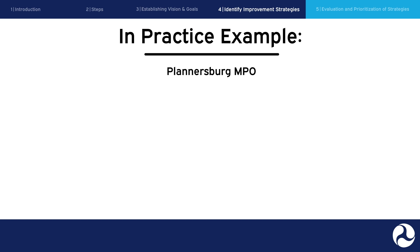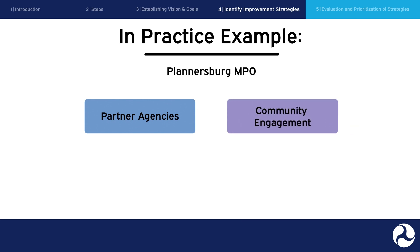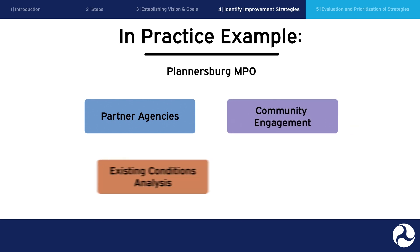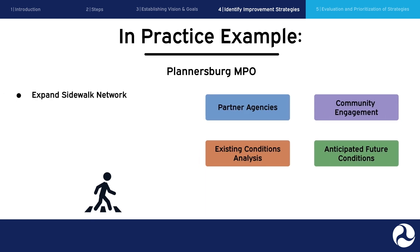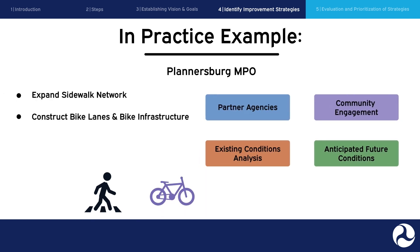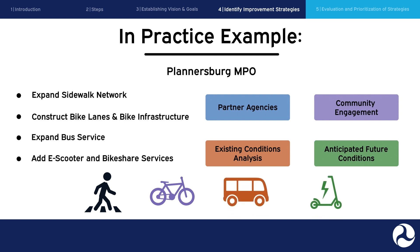In practice example: the MPO staff work with partner agencies, synthesize the results from the previous community engagement, their analysis of the planning area's existing conditions, and their understanding of anticipated future conditions to identify a range of non-vehicular strategies that would improve connectivity. The MPO recommends strategies to expand the sidewalk network, construct bike lanes and additional bicycle infrastructure, expand the bus service, and add e-scooter and bike-share services.